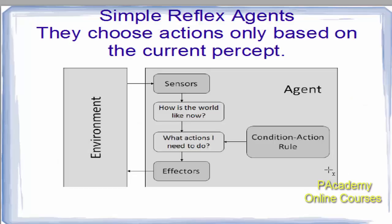Simple reflex agents choose actions only based on the current percept, ignoring the rest of the percept history. The agent function is based on a condition-action rule: if condition, then action. They use sensors to see how the world is right now, and based on the current situation, a set of condition rules determines what action needs to be performed by the effectors.